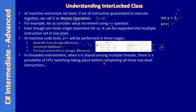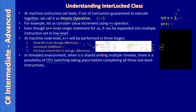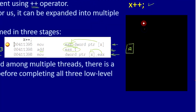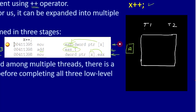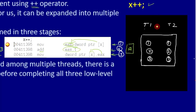In a threaded environment, when x is shared among multiple threads, there is a possibility of a CPU context switch taking place before completing all three low-level instructions. Let's say we have two threads T1 and T2, and these three instruction sets are numbered 1, 2, and 3. Let's say the value in x is 7 initially.